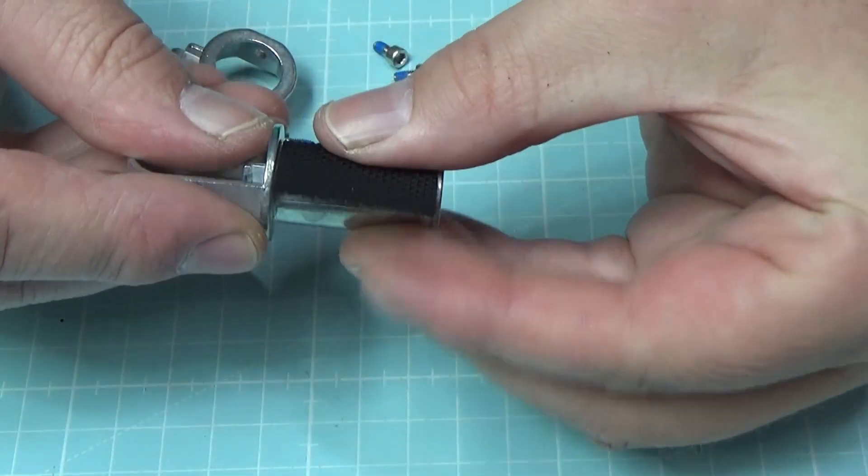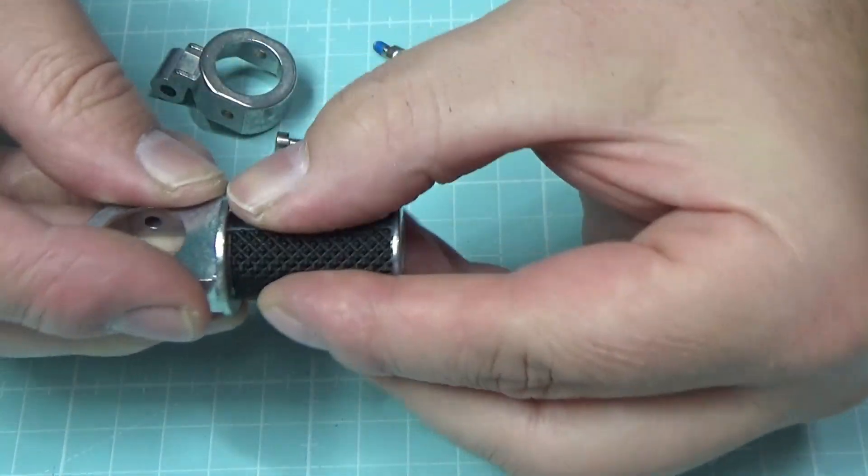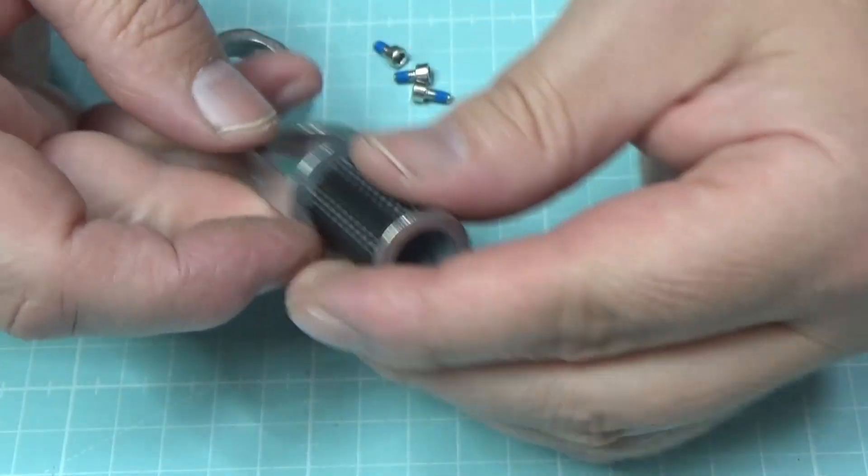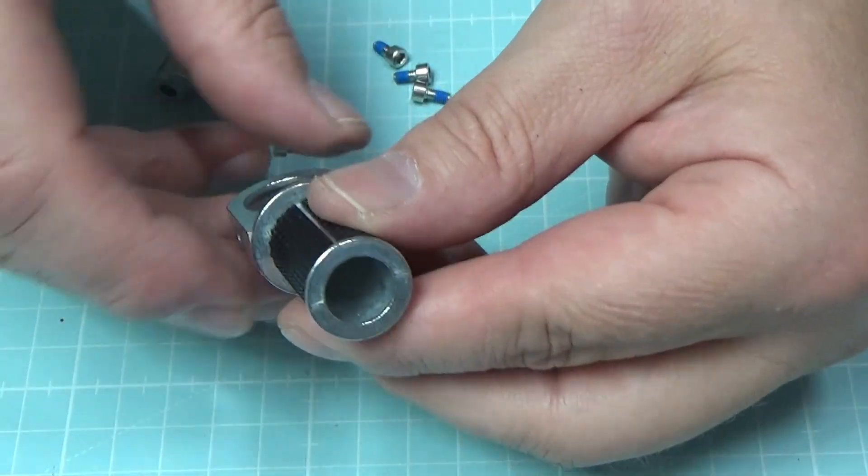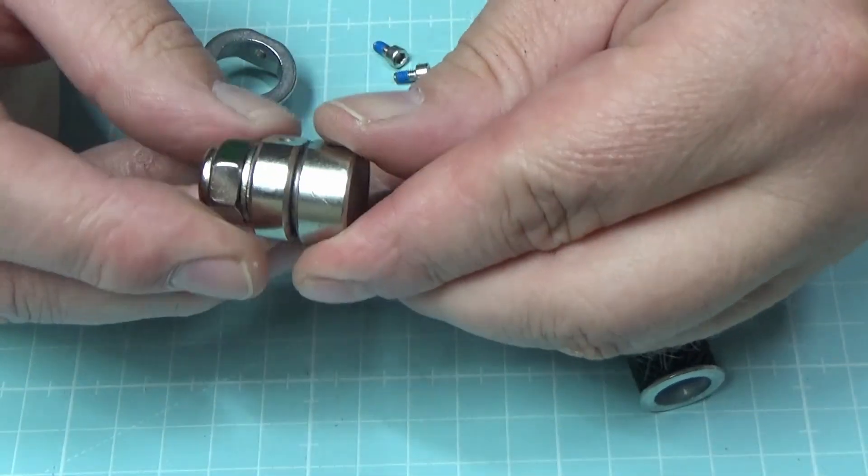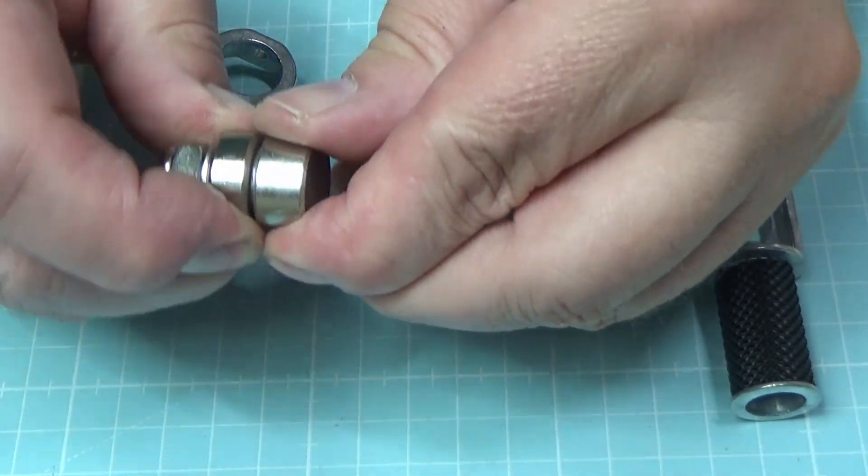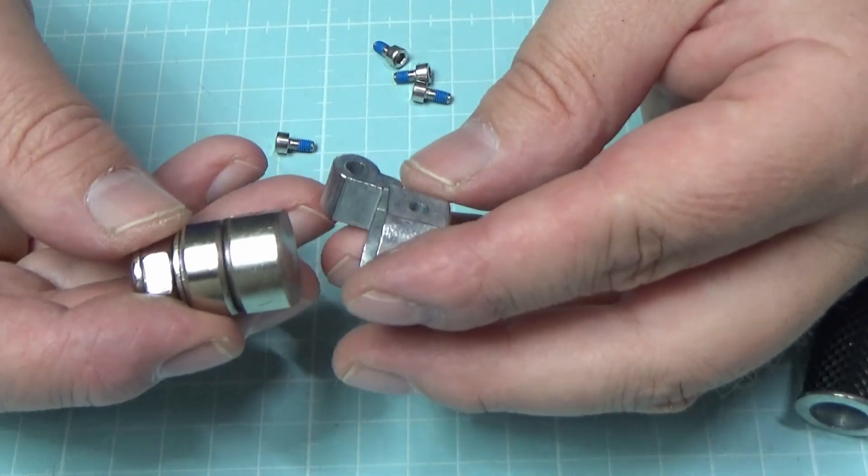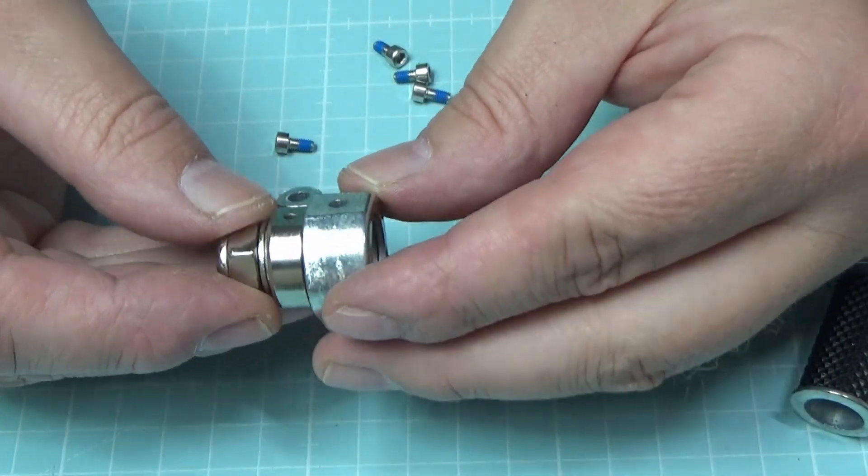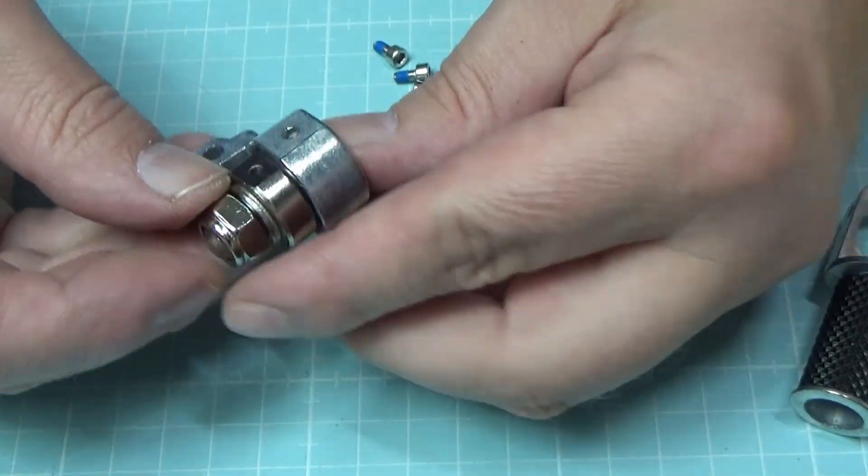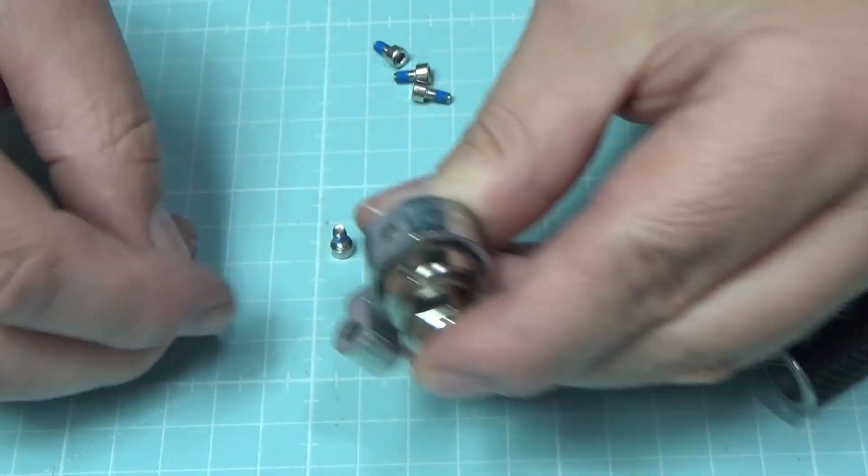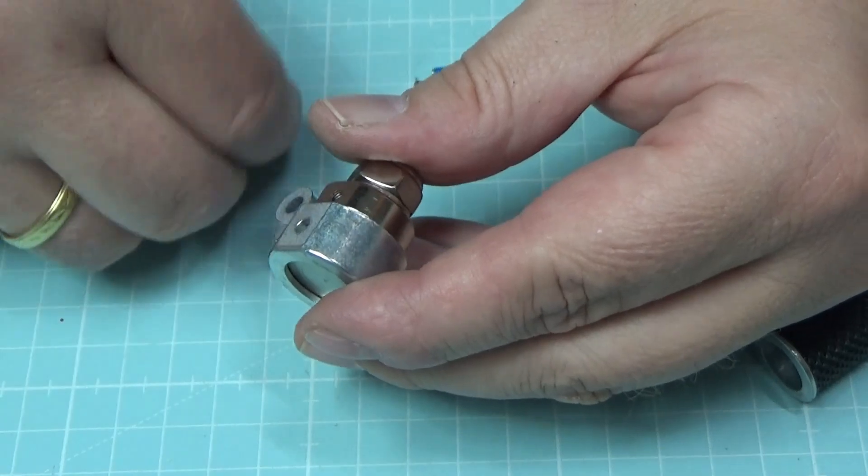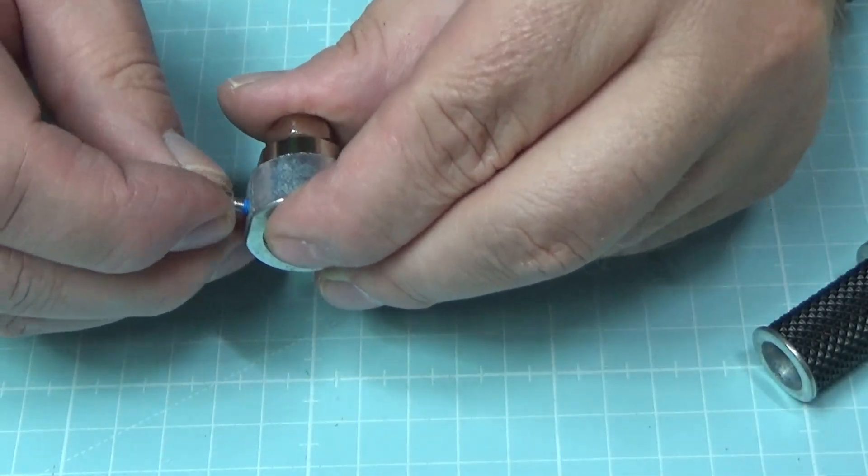Und dann kommt das Ganze hier ran. So hat er angefangen in der Bauanleitung. Dann machen wir das auch. Dann drehen wir das mal hier rum. Fili-Bumm. Und kommen fast wieder am anderen Ende an. Schön festgemacht. Und so sieht das dann aus. Dann haben wir hier das Drehgelenk, was jetzt natürlich noch nicht dreht. Das geht nämlich schön schwer. Das ist auch gut so. Und dann haben wir hier diese Verbindung. Und das kommt dann hier rein. Geht auch nicht weiter.